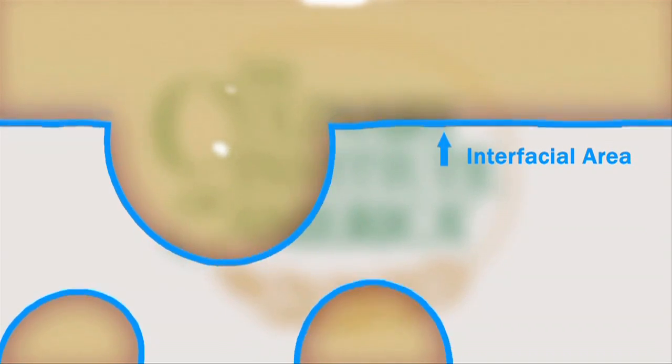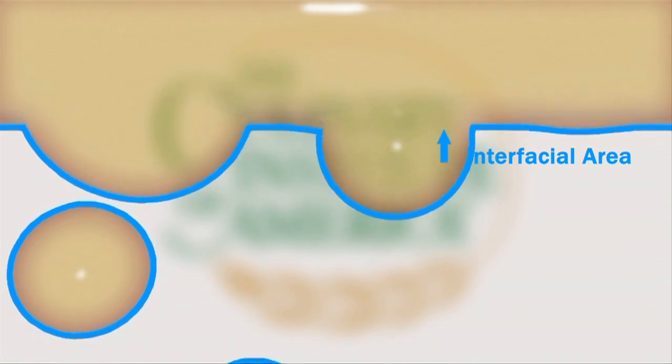At the interface between the two different phases, there is high surface tension, so mixtures tend to reduce this tension by minimizing the interfacial area. The minimum surface area occurs when the two components are completely separated.